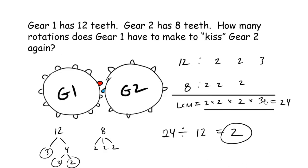So, gear 1 must rotate twice before the red and blue pieces kiss again. You may know how to do this question quickly using this technique, LCM divided by number of teeth for that gear. However, really do stop and take some time to think about why the LCM divided by the number of teeth happens to be when they meet up again.